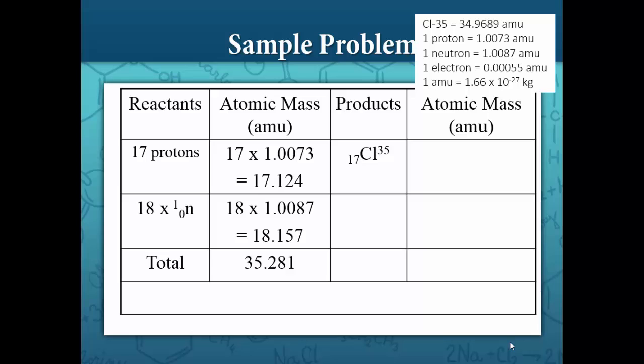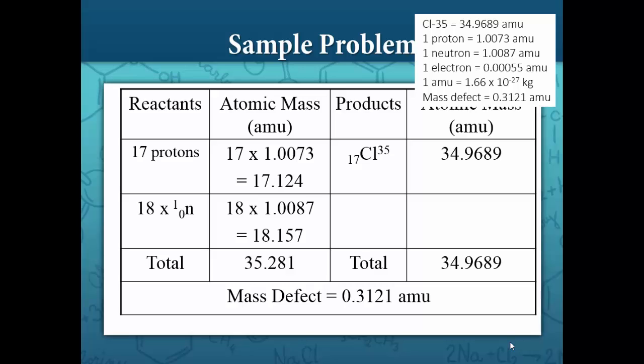We know, however, that the mass of chlorine-35 is equal to 34.9689 AMU, which is 0.3121 AMU less than the mass of the sum of its nucleons. Therefore, the mass defect is 0.3121 AMU.